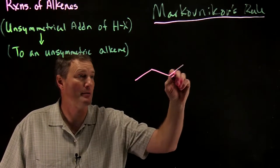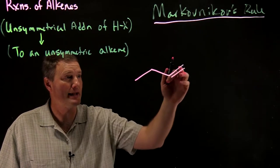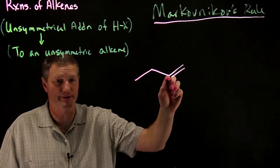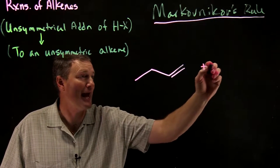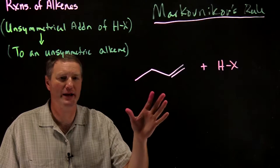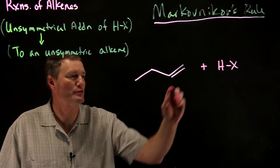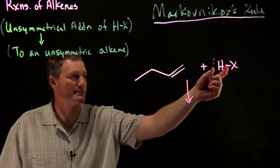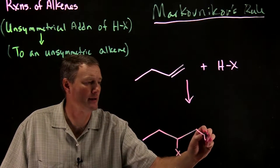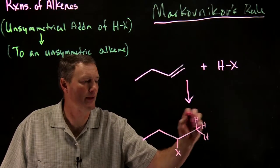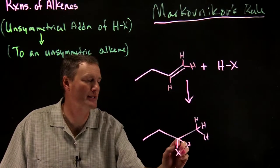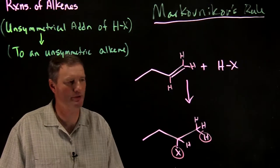We start with a carbon-carbon double bond that is not symmetric. Notice this carbon has two hydrogens and the other carbon has a carbon substituent and one hydrogen, so these two carbons are definitely different. When we add HX to this, there is actually a preferred product. We do get two products — we could add H and X in two different ways, where the X group adds to one carbon or the other.